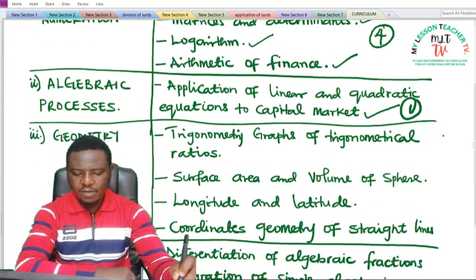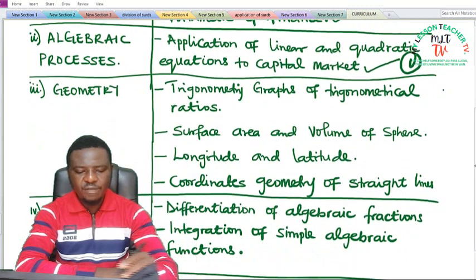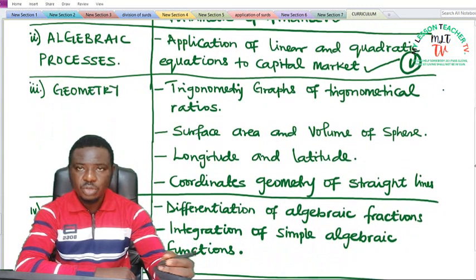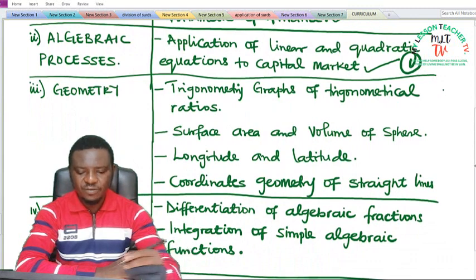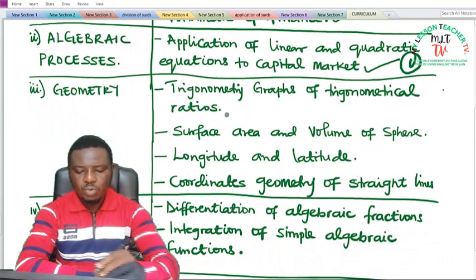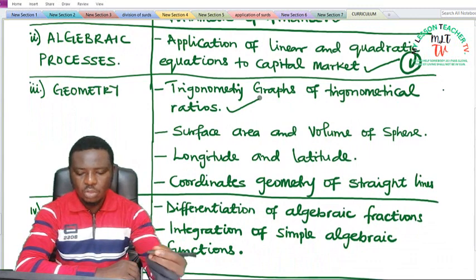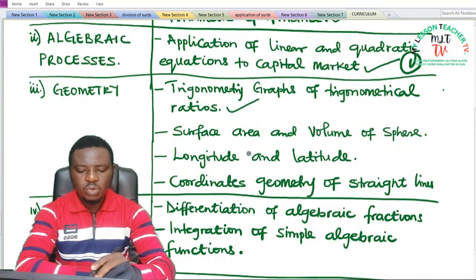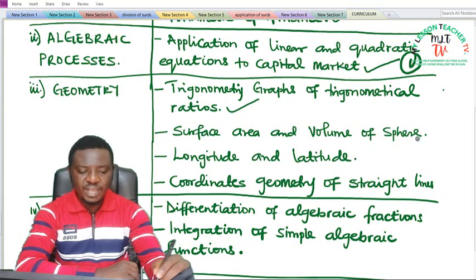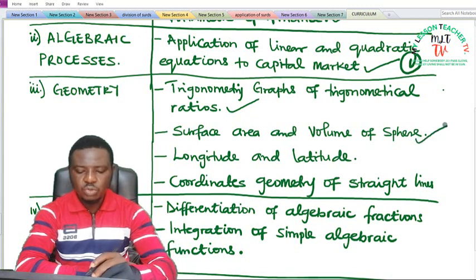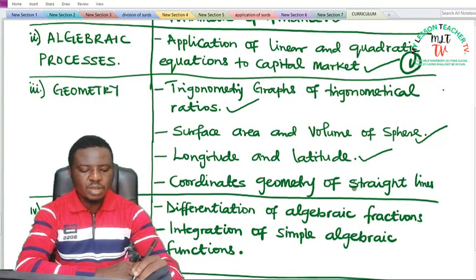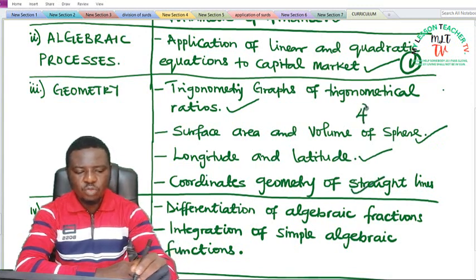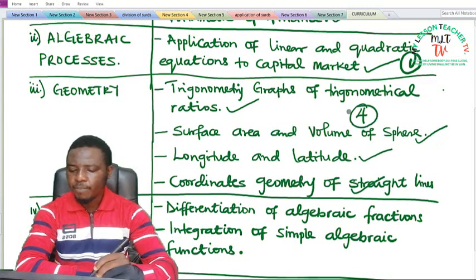Under Geometry we have trigonometry graphs of trigonometrical ratios. When we talk about the sine, cosine and tangent of angles as well as their inverses, we will look at cosec, sec and cot. Also we shall look at surface areas and volume of sphere. We shall also look at longitude and latitude as well as the coordinate geometry of straight line. So we have approximately four topics under Geometry.